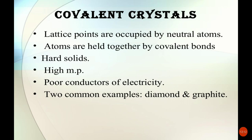In covalent crystals, the lattice points are occupied by neutral atoms held together by covalent bonds. They are hard solids with high melting points and are poor conductors of electricity. Two common examples are diamond and graphite.